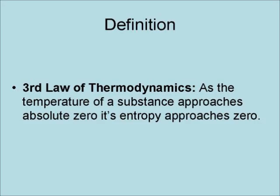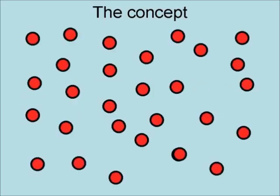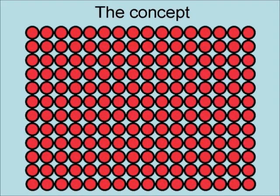The third law of thermodynamics states that as the temperature of a substance approaches absolute zero, its entropy approaches zero. The concept is that because heat is a result of the motion of the molecules in an object, and that this motion causes the molecules to move around and spread out, this causes a condition of high entropy. As an object is cooled,